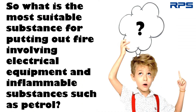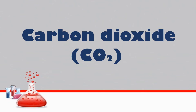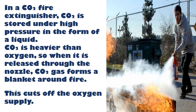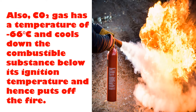The most suitable substance for putting out fire involving electrical equipment and inflammable substances such as petrol is carbon dioxide. CO2 is a non-inflammable gas used in carbon dioxide fire extinguishers, where it is stored under high pressure in liquid form. Since CO2 is heavier than oxygen, when released through the nozzle it forms a blanket around the fire and cuts off the oxygen supply. Additionally, CO2 gas has a temperature of minus 66 degrees Celsius, cooling the combustible substance below its ignition temperature and putting out the fire.